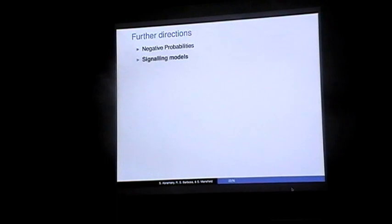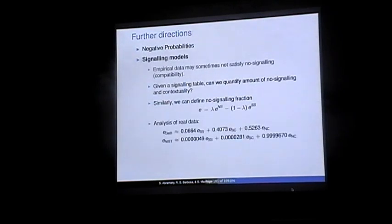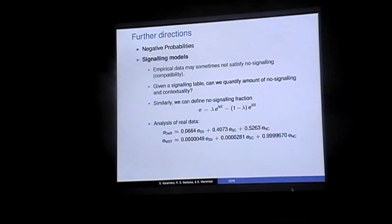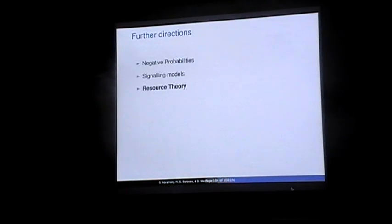The other two directions: first, signaling models — if you have empirical data that may not satisfy no-signaling, we can use a similar idea and define a no-signaling fraction, which we applied to real data from Delft and Innsbruck experiments. The ideas around the no-signaling fraction are not fully developed — for instance, do we take the no-signaling fraction first then the contextual fraction, or the other way around? These things are not unique, so more work is needed. Second, connections with the contextuality-by-default approach. Finally, a resource theory for contextuality: trying to find which properties good measures should satisfy and identifying operations that should be contextuality non-increasing.